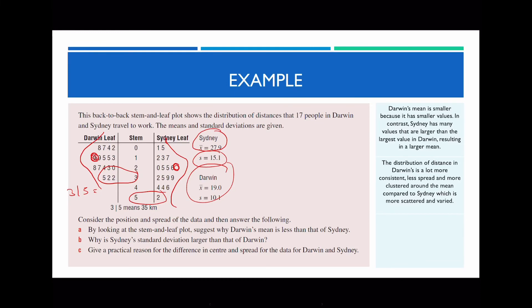For part C, you need to provide a practical reason to explain the difference in centre and spread. Based on your knowledge of those two cities, Sydney is a larger city compared to Darwin. The difference in spread and centre is because Darwin is a smaller city, and as a result you don't need to travel far at all to get to work.